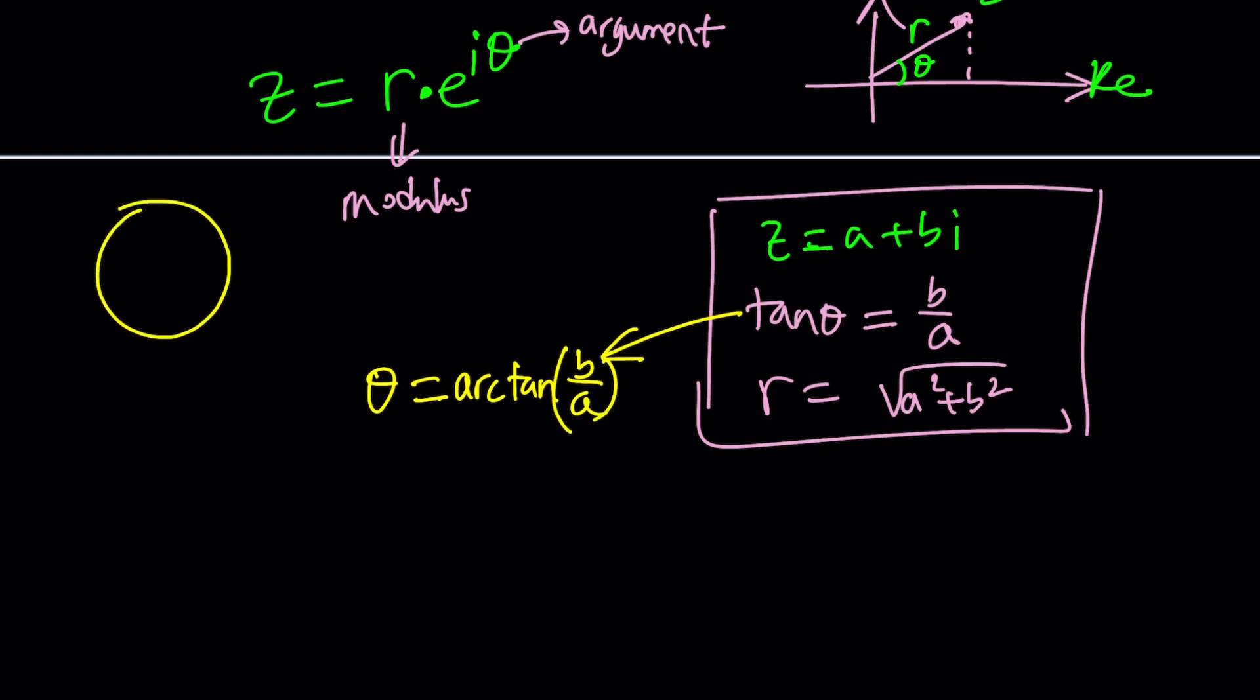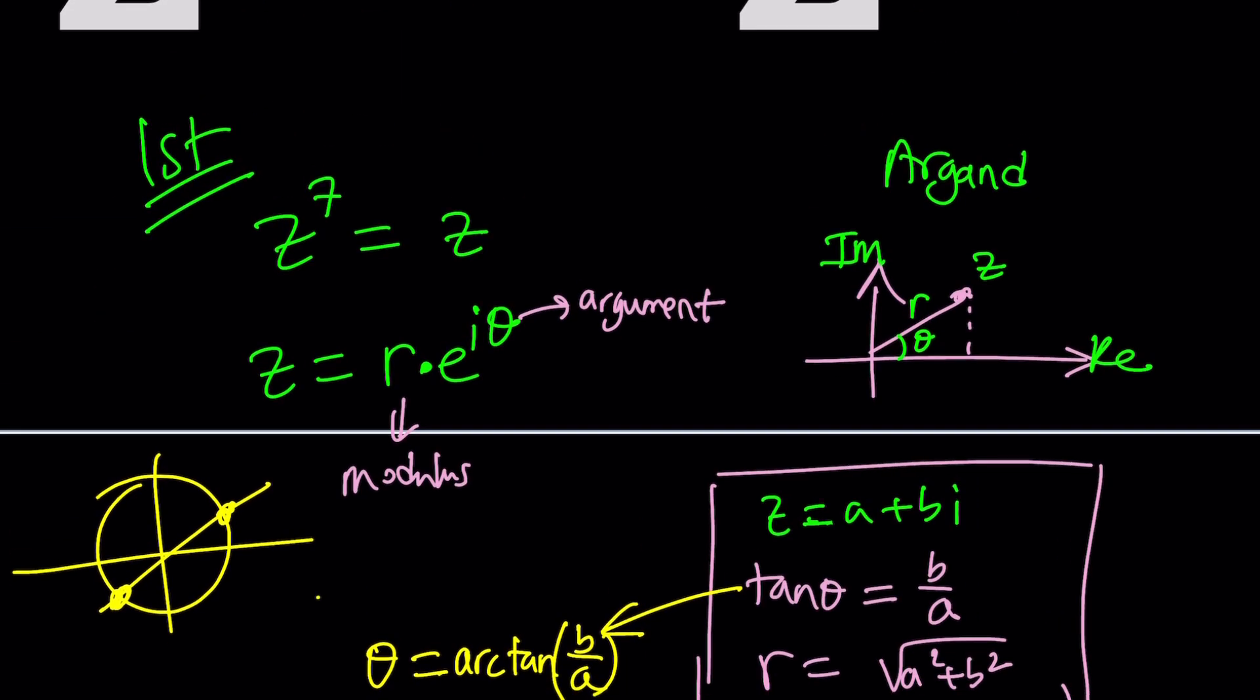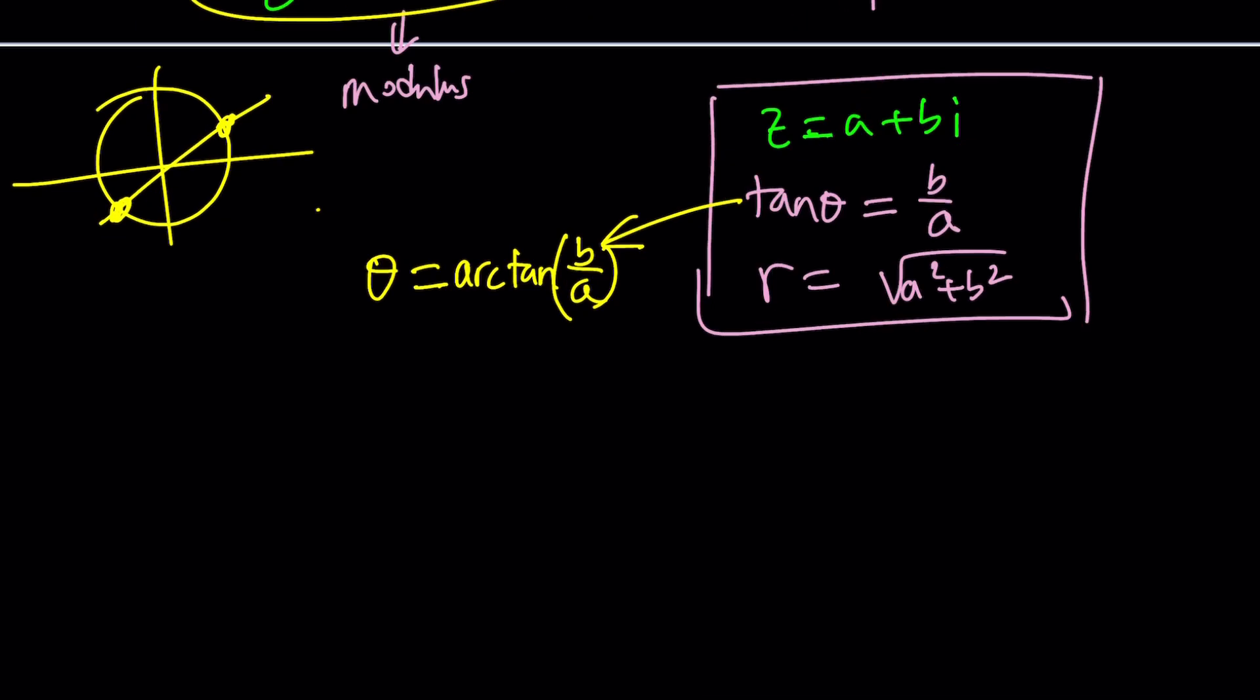If you do inverse tangent function, you should be getting theta equals arctangent b over a. But this is not always true because if you consider the unit circle, there are two angles that have the same tangent and they are pi radians apart. We kind of need to be careful to make sure arctangent is a well-defined function.